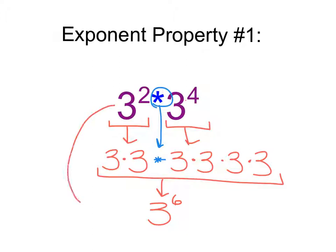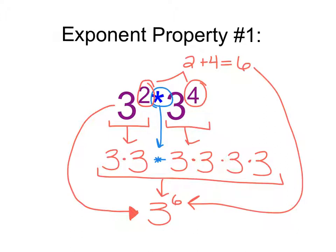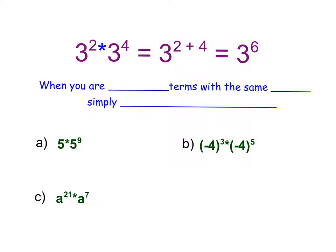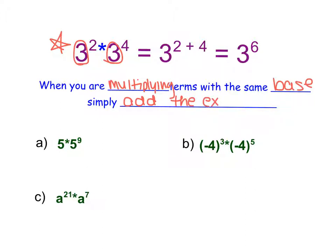We can rewrite this expression as one term with a base of 3 and an exponent of 6. If we look carefully, we can get to 6 by taking the two exponent values — 2 and 4 — and adding them together. That's our first exponent property: when we have common bases being multiplied, we can simply add their exponents together and rewrite it as one term with a power.